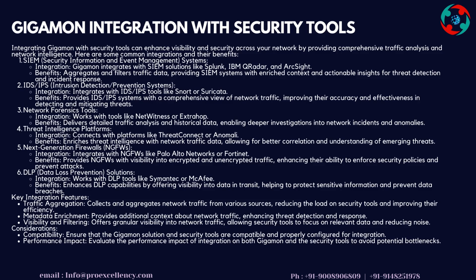Threat Intelligence Platforms Integration: connects with platforms like ThreatConnect or Anomaly, enriching threat intelligence with network traffic data for better correlation and understanding of emerging threats. Next Generation Firewalls (NGFWs) Integration: integrates with NGFWs like Palo Alto Networks or Fortinet, providing visibility into encrypted and unencrypted traffic and enhancing their ability to enforce security policies and prevent attacks. DLP Data Loss Prevention Integration: works with DLP tools like Symantec or McAfee, enhancing DLP capabilities by offering visibility into data in transit, helping protect sensitive information and prevent data breaches.